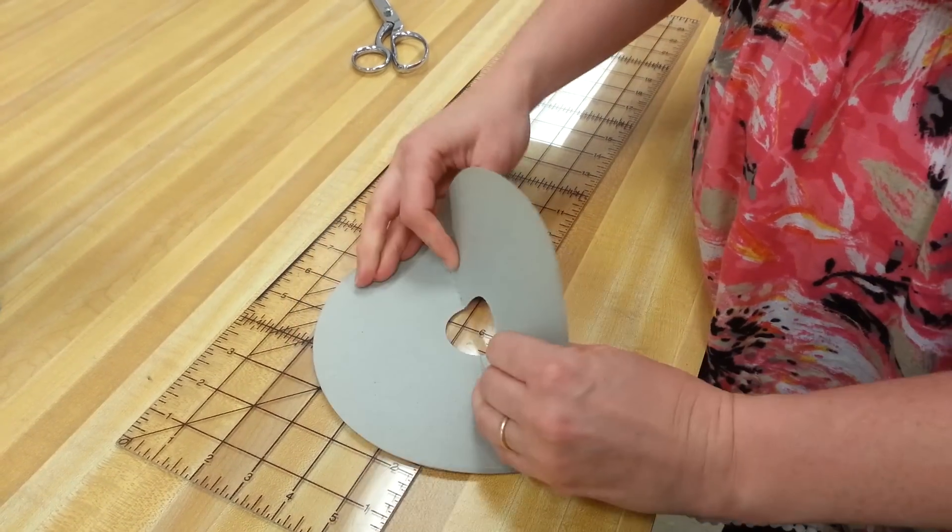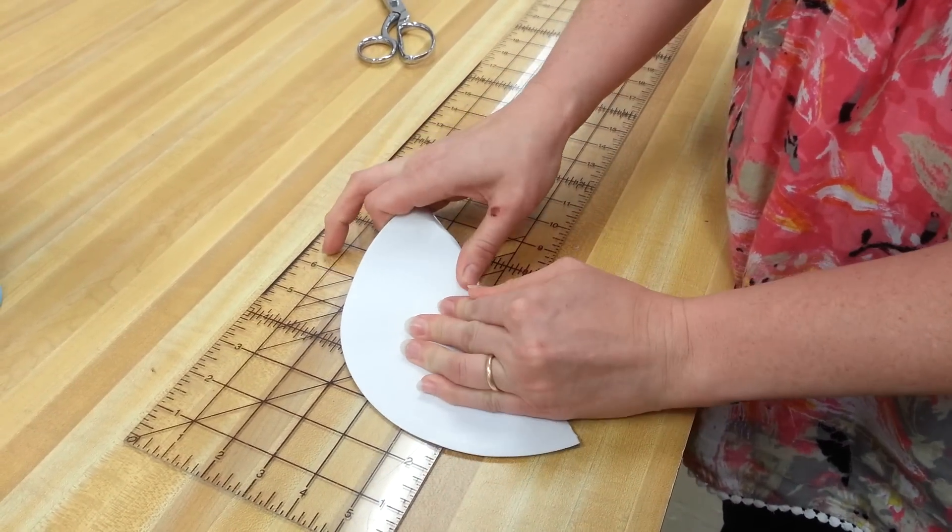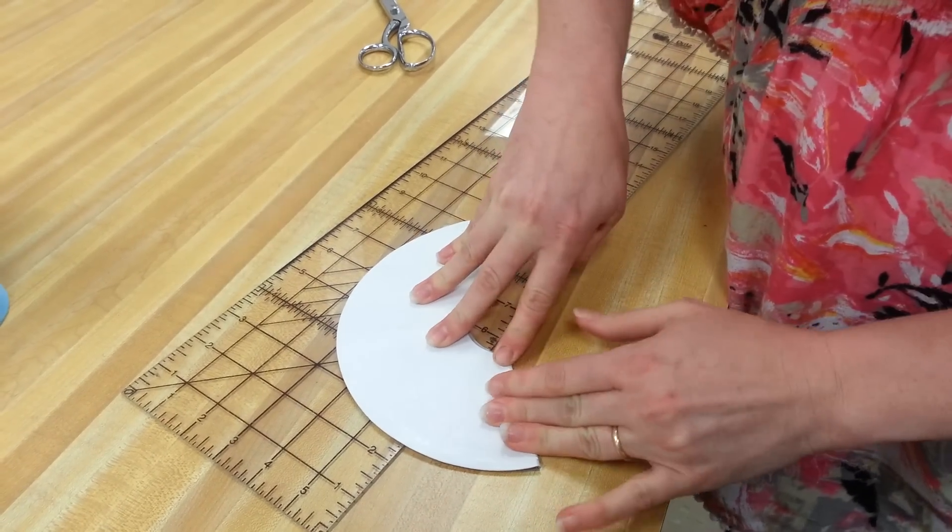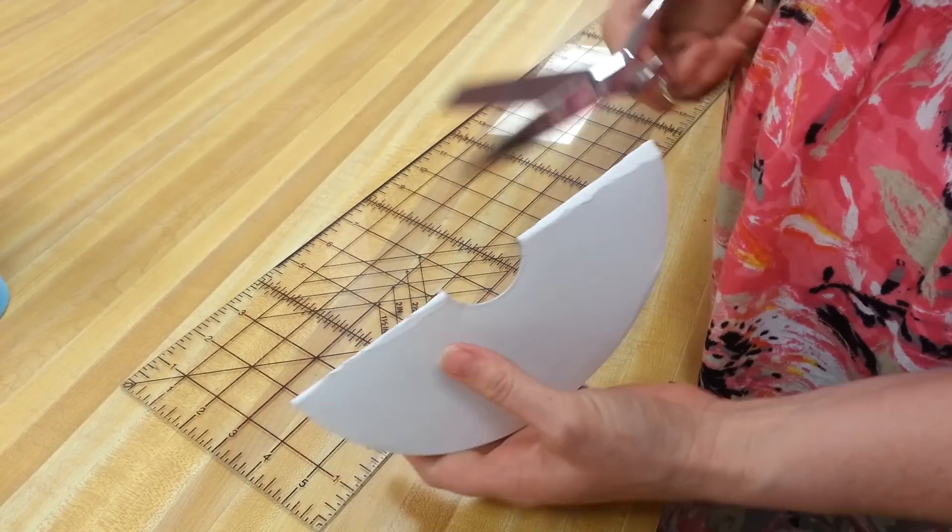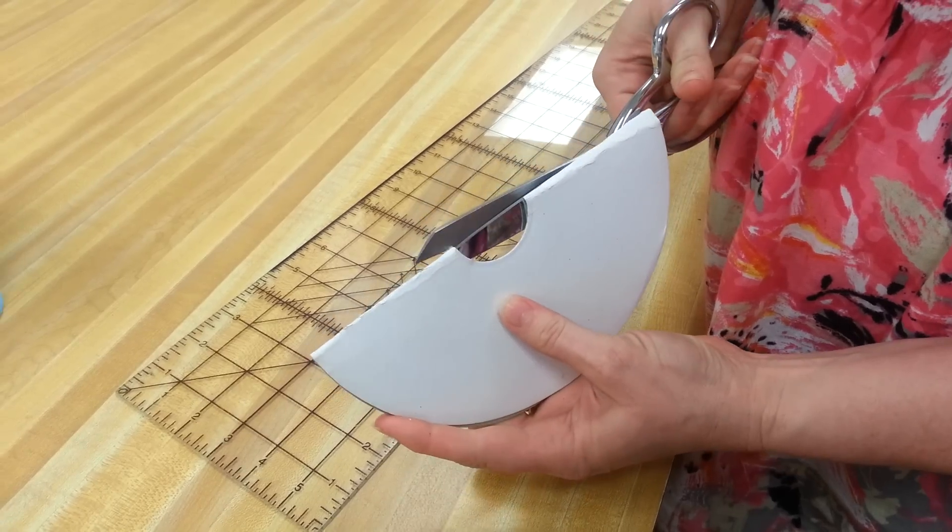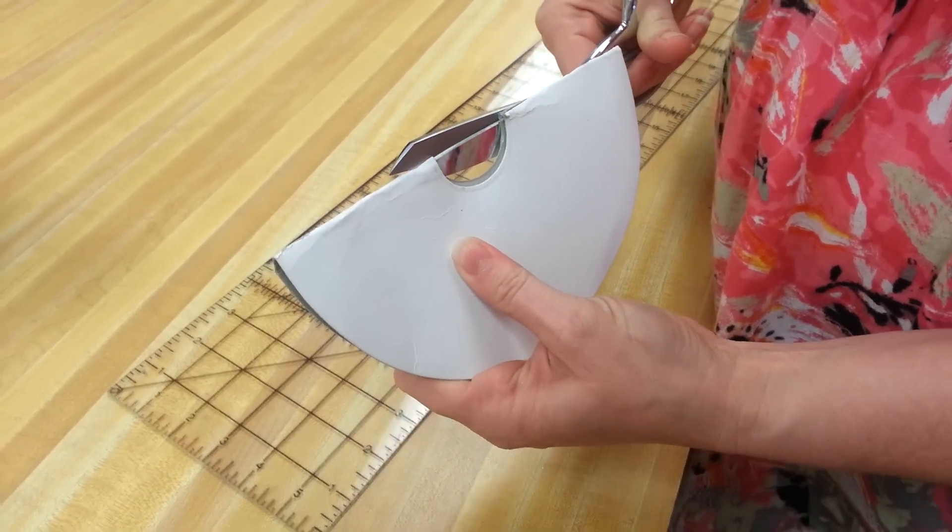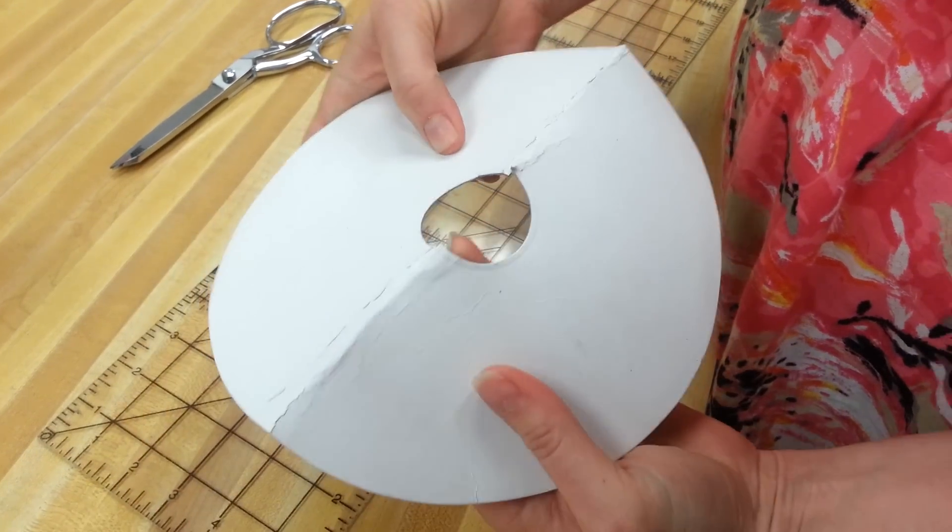You're going to fold it over, fold it in half, and this is what we're going to use to make the tulle pom-pom. What I like to do is cut some slits into my form and you'll find out why in just a minute. So we cut some little slits there in the middle opening.